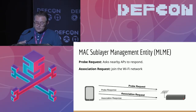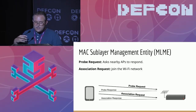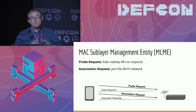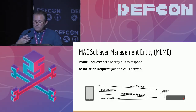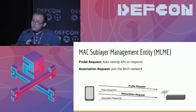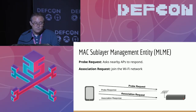We'll also look at the association request, which is where a client joins a Wi-Fi network. The client includes many of the same capabilities as were in its probe request, plus a few more. There are more MLME frames, like authentication or action frames to modify various parameters, but for the taxonomy mechanism we're talking about today, we'll just rely on these two.